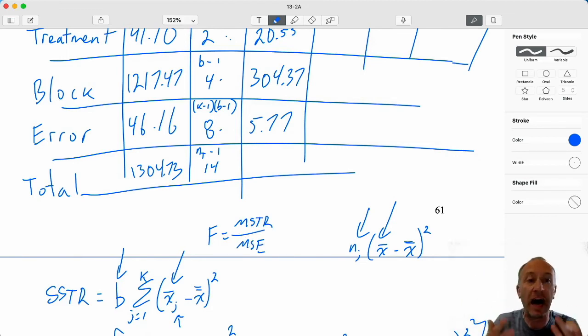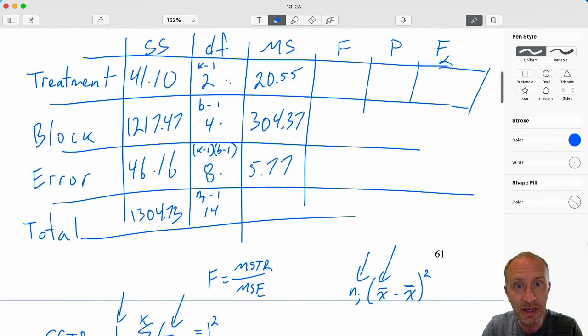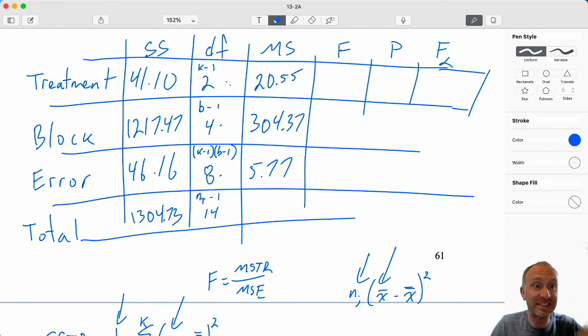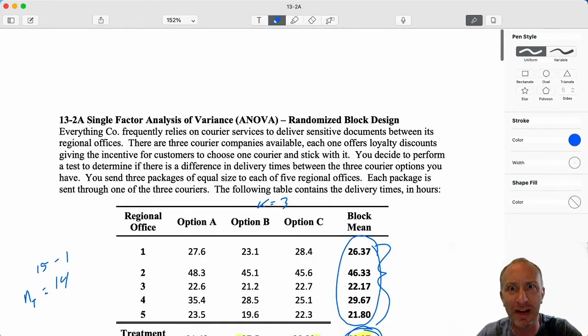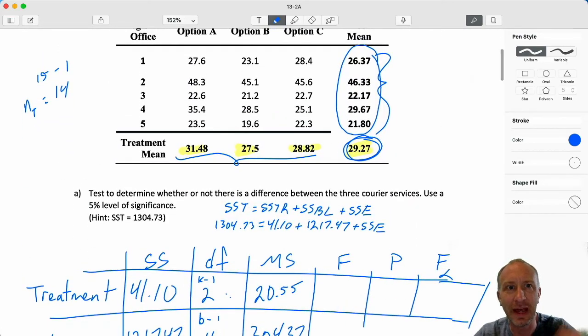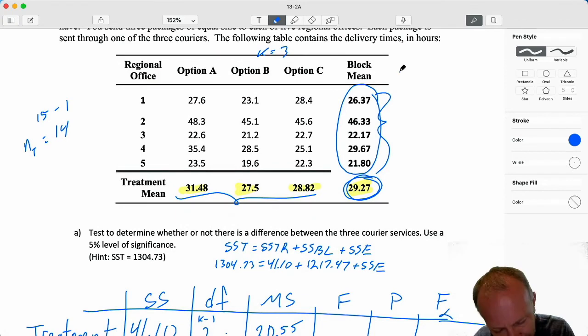So our test statistic is still MSTR over MSE. This is still an upper tail F-test. Is MSTR statistically significantly greater than MSE? If it is, well, that gives evidence in support of the alternative, which I'm just realizing I think we forgot to write. Well, we forgot to write it. Okay, well, it's the same.